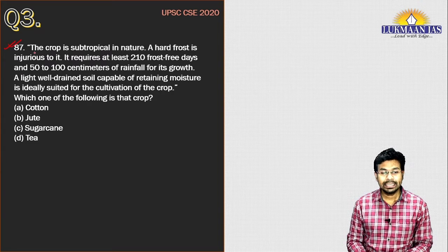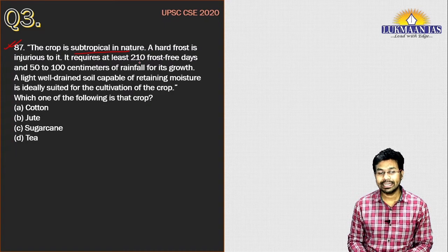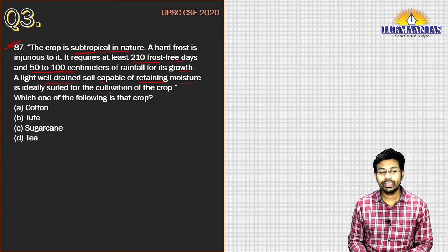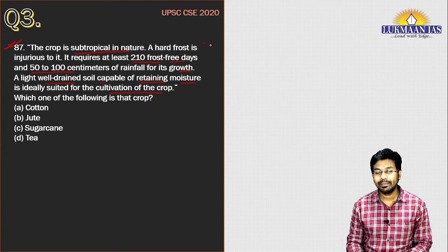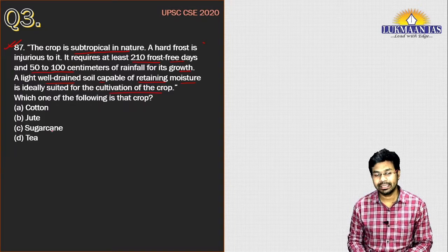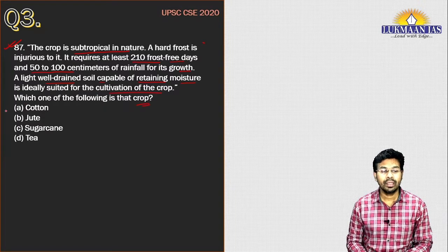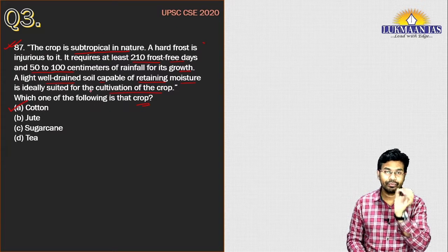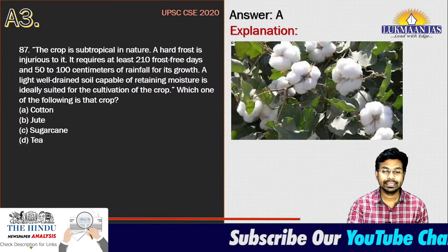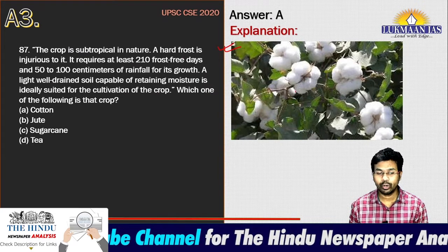Now the next question says: the crop is sub-tropical in nature; a hard frost is injurious to it; it requires at least 210 frost-free days and 50 to 100 centimeters of rainfall for its growth; a light, well-drained soil capable of retaining moisture is ideally suited for its cultivation. All these statements suit cotton cropping. So the correct answer for this question is option A — cotton.